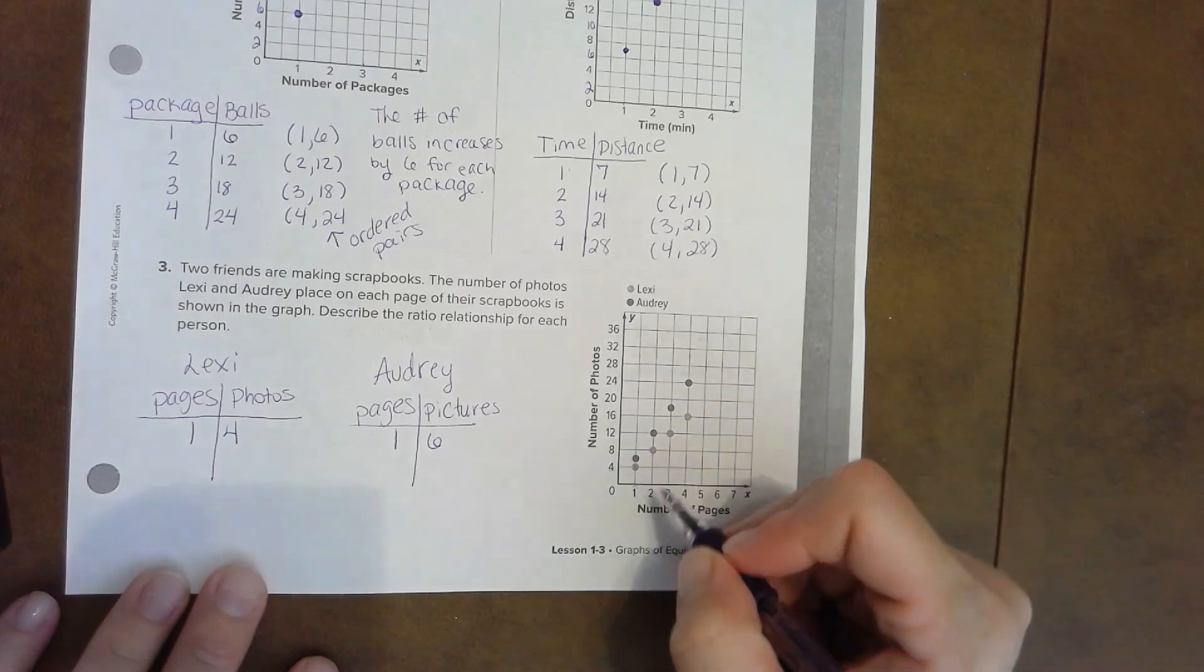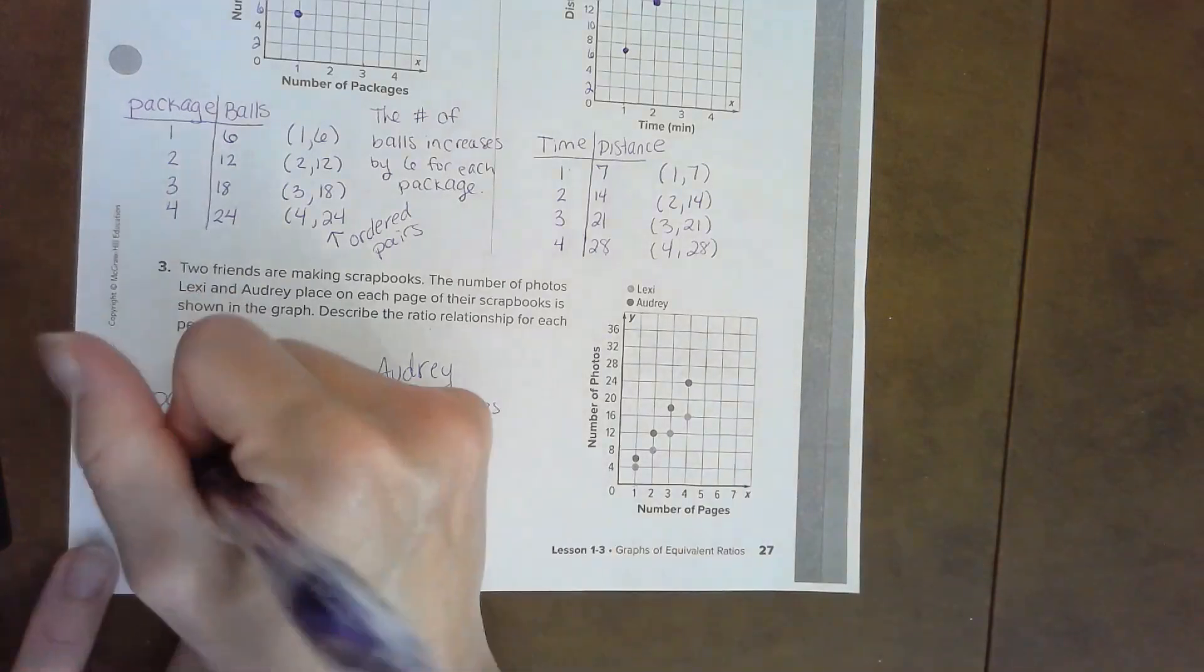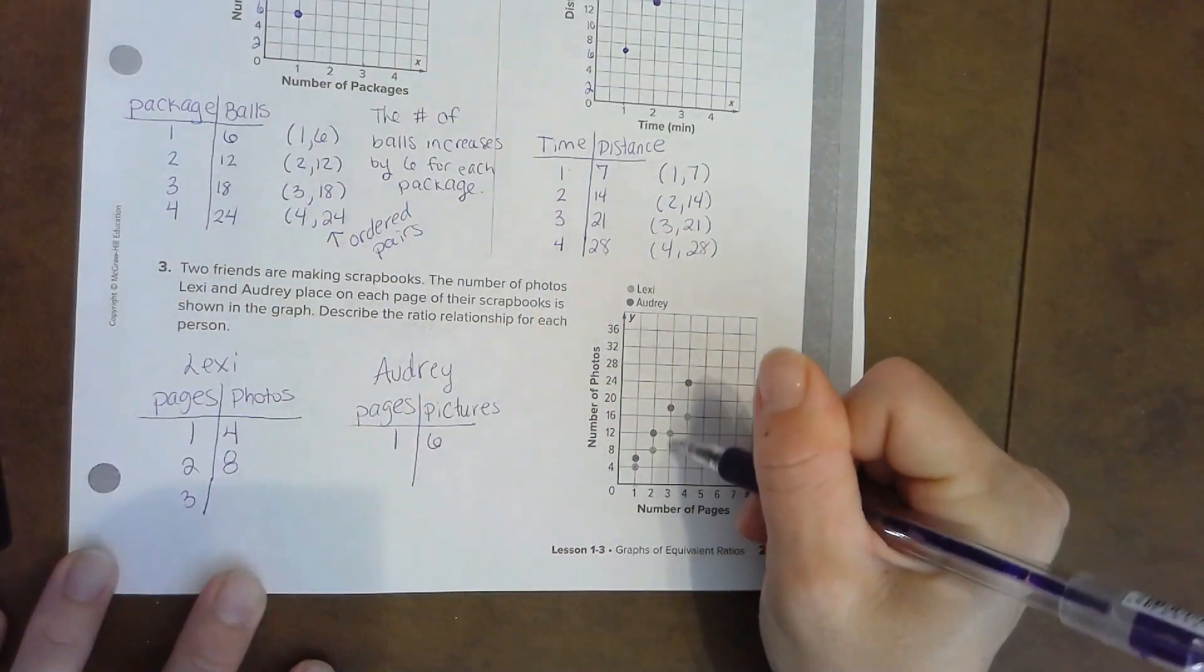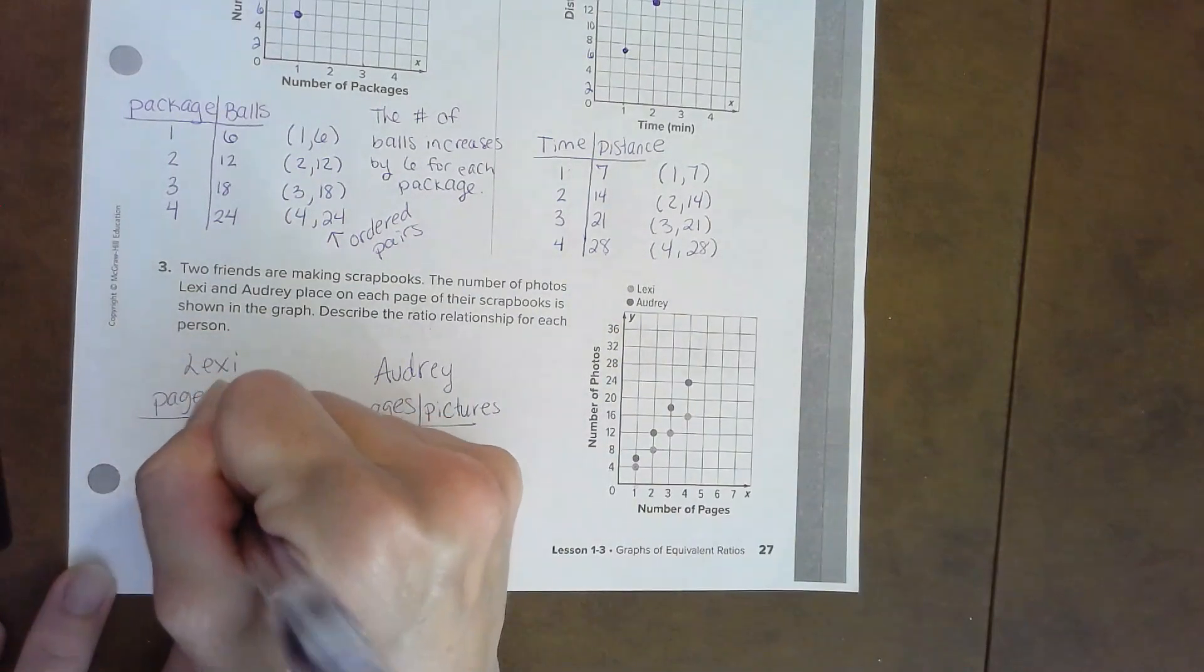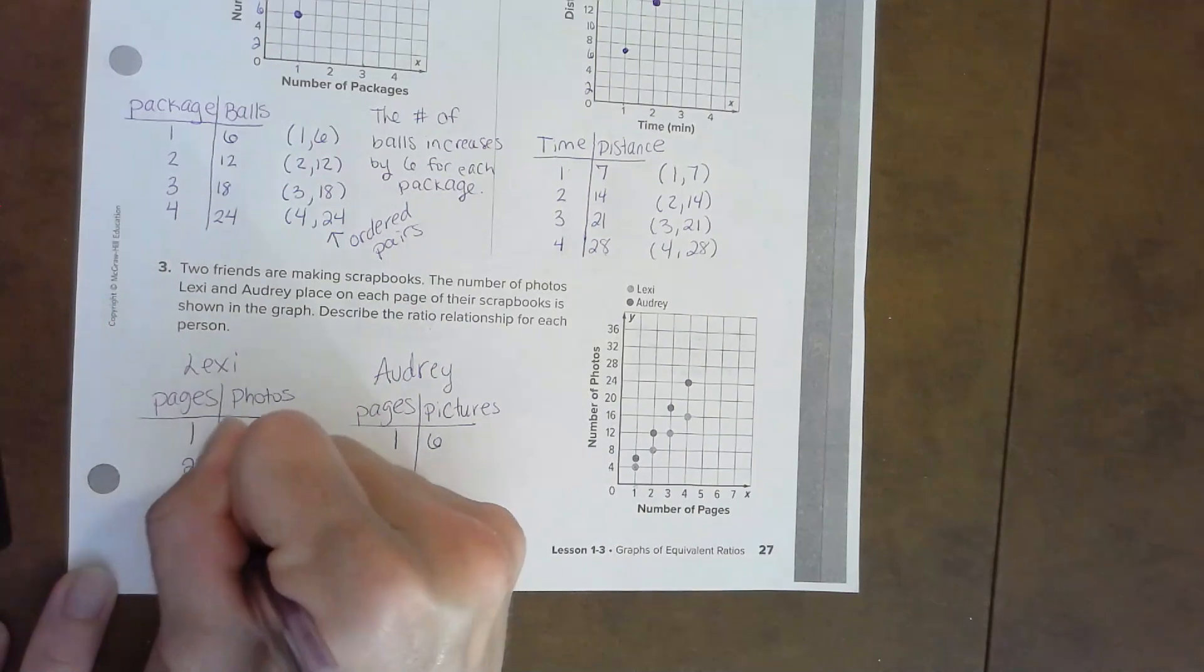So what are your thoughts on that? Does she put six pictures on one page? Well, let's finish our ratio table in just a minute. Let's do Lexi's. She's two, eight, then three, twelve, then four, sixteen.